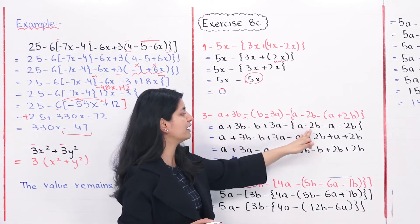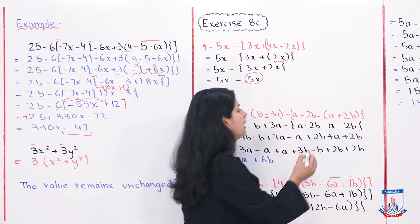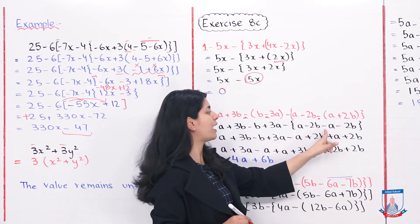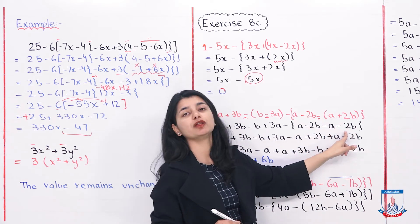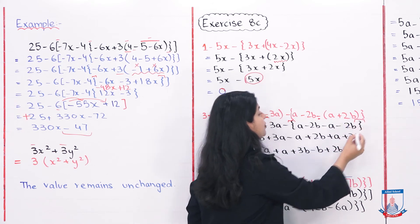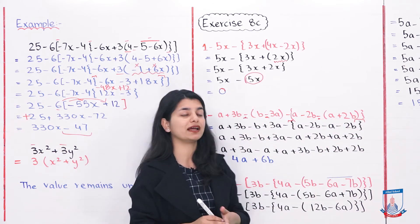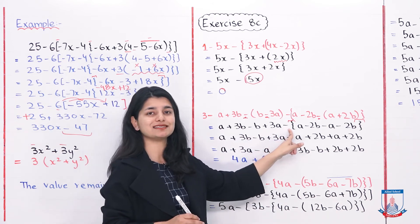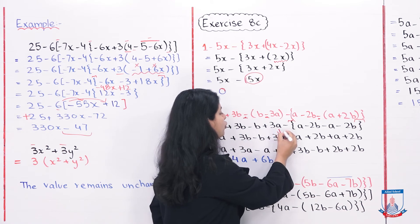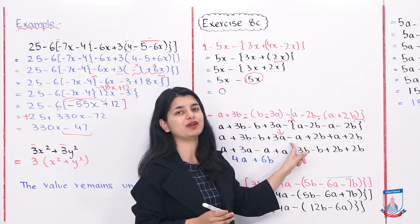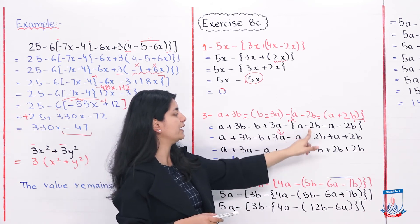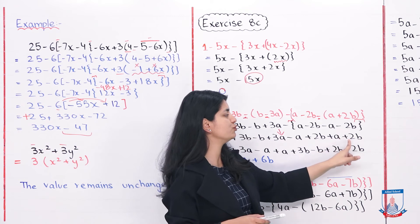Then for the next bracket, a minus 2b comes down as it is, and there is a minus sign outside. So we multiply minus into each term: minus into a gives minus a, and minus into plus 2b gives minus 2b. The signs change accordingly. Now we have our curly brackets or braces remaining. The sign outside is minus, so all signs inside will change: a positive becomes minus a, minus 2b becomes plus 2b, minus a becomes plus a, and minus 2b becomes plus 2b.